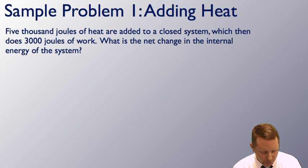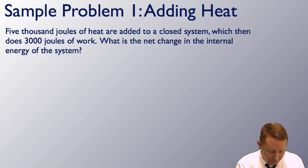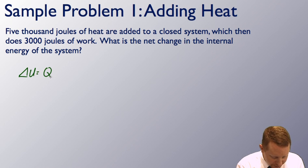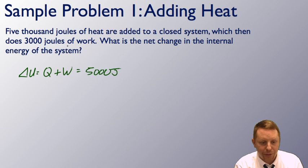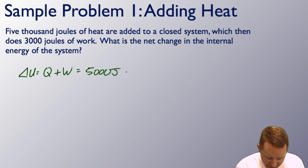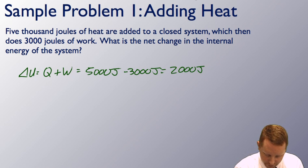Sample problem one: 5,000 joules of heat are added to a closed system, which then does 3,000 joules of work. What is the net change in the internal energy of the system? The change in internal energy equals heat added to the system plus work done on the system: 5,000 joules are added, but the system does 3,000 joules of work, so that's negative 3,000. Therefore, the net change in internal energy of the system is 2,000 joules.